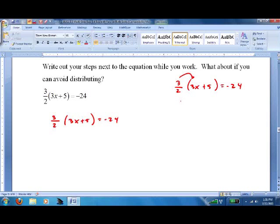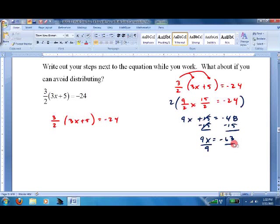So we distribute, that's what we were told to do. That's 9 halves x plus 15 halves equals negative 24. Well, when I see fractions, I want to get rid of them, so I'm going to multiply everything by 2. I'll get 9x plus 15 equals negative 48. Subtract 15 from both sides. I get 9x equals negative 63, divide by 9, x equals negative 7.